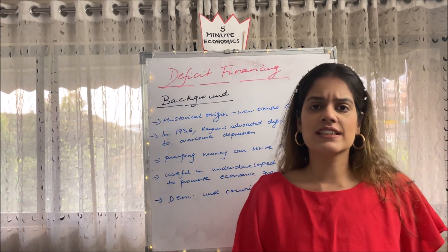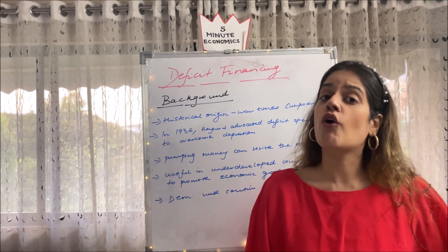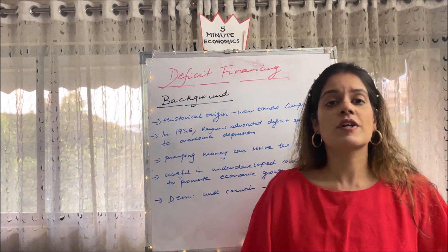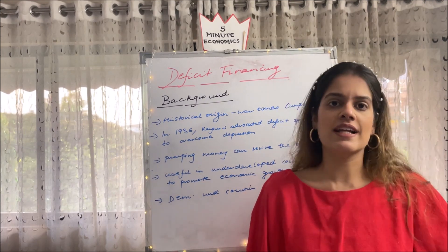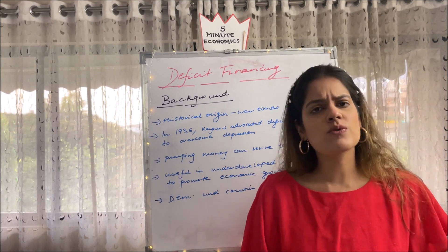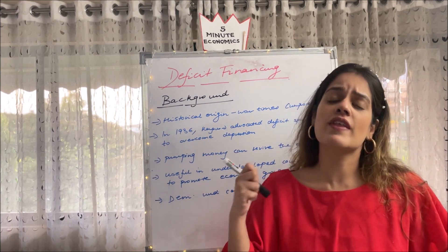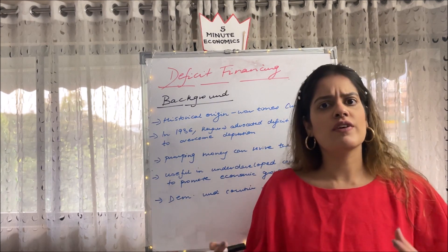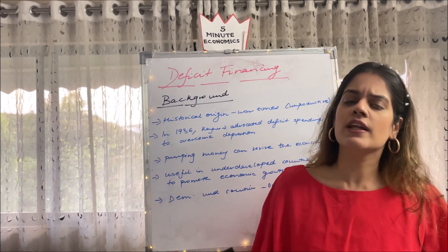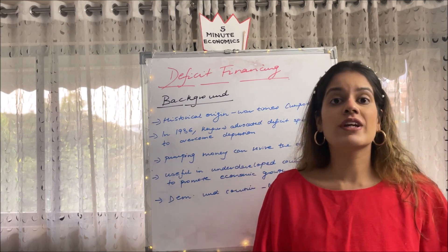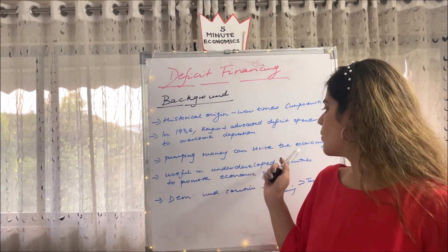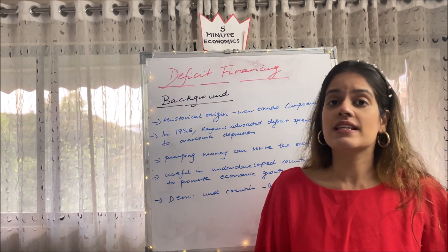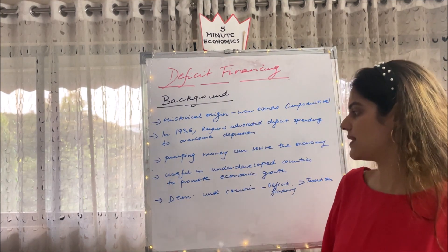Back in 1936, during the period of the Great Depression — which occurred around 1932 — Keynes suggested that the best way for an economy to come out of that depressionary lull period is through deficit financing. He said that printing additional money and pumping more money into the economy can bring a revival. This concept also dates back to that time.